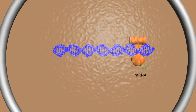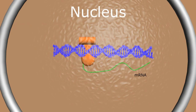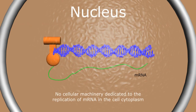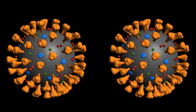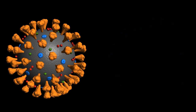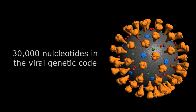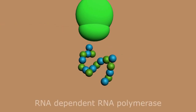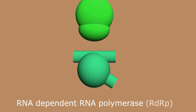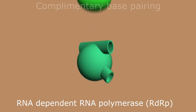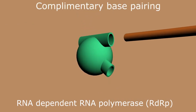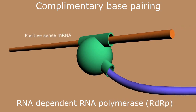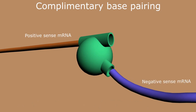Our messenger RNA is made in the nucleus of our cells, so we have no cellular machinery dedicated to the replication of messenger RNA in the cytoplasm. Without another piece of genetic equipment, each viral particle could only produce one copy of itself in our cell cytoplasm — not a very efficient mechanism of reproduction. Therefore, the SARS-CoV-2 virus dedicates the majority of its 30,000 base genetic code — two-thirds to be exact — to produce a large protein enzyme called RNA-dependent RNA polymerase, or RDRP. Through complementary pairing of adenosine, uracil, guanine, and cytosine, RDRP produces a negative copy of the viral genetic code, appropriately named negative-sense messenger RNA.